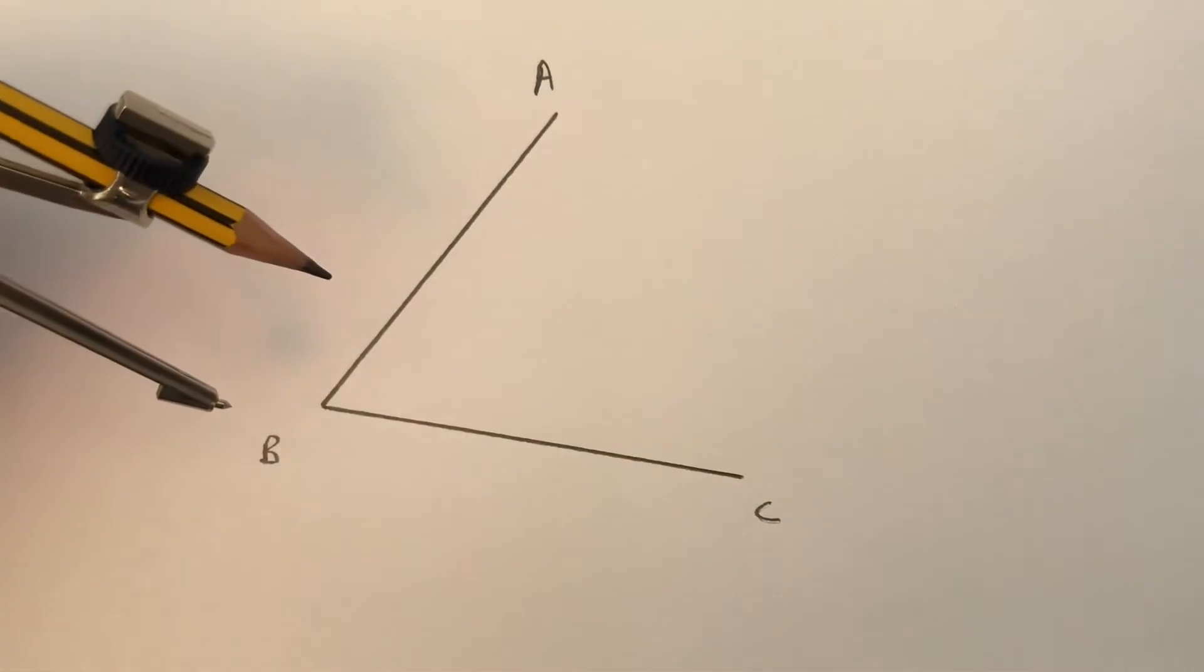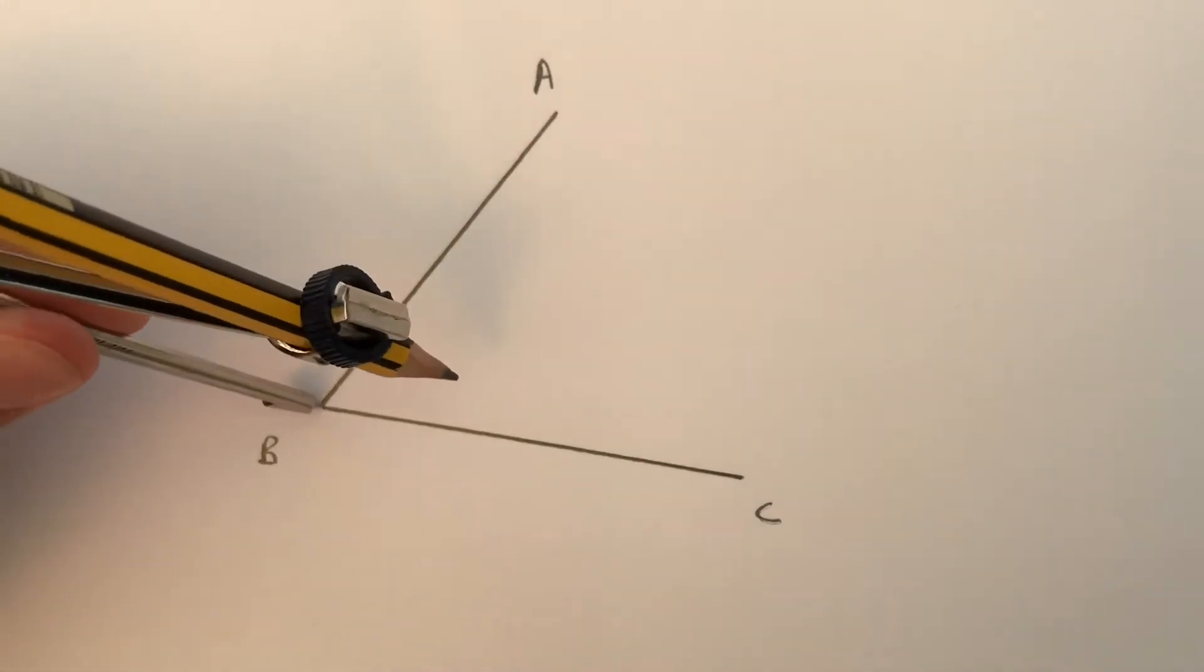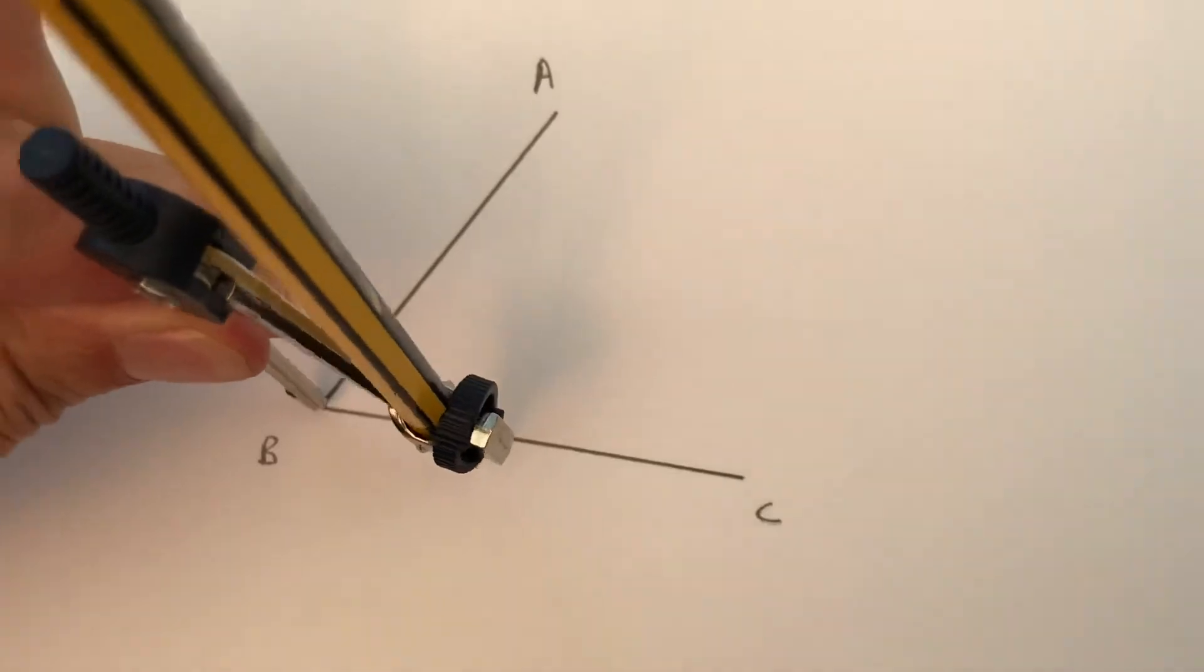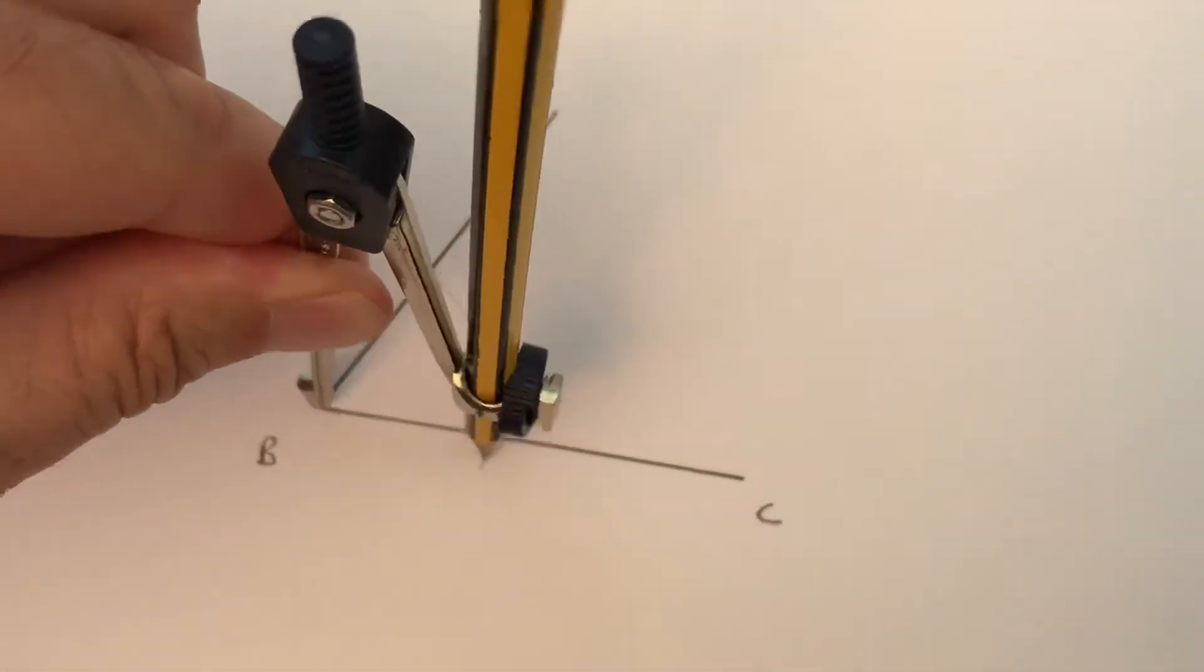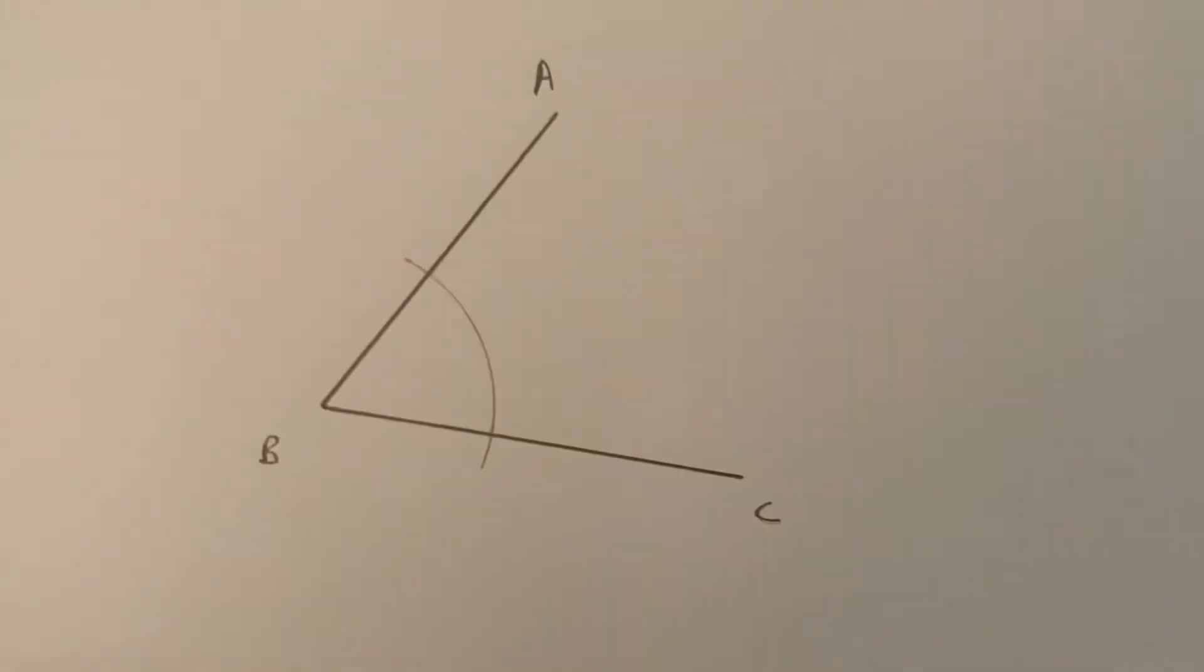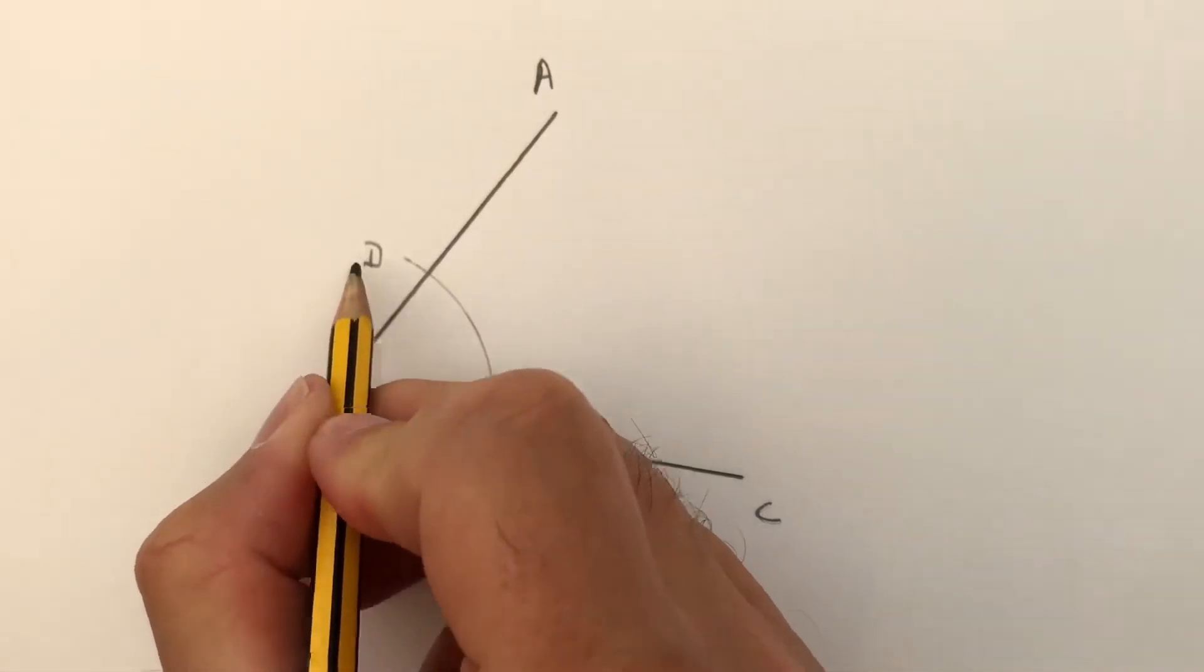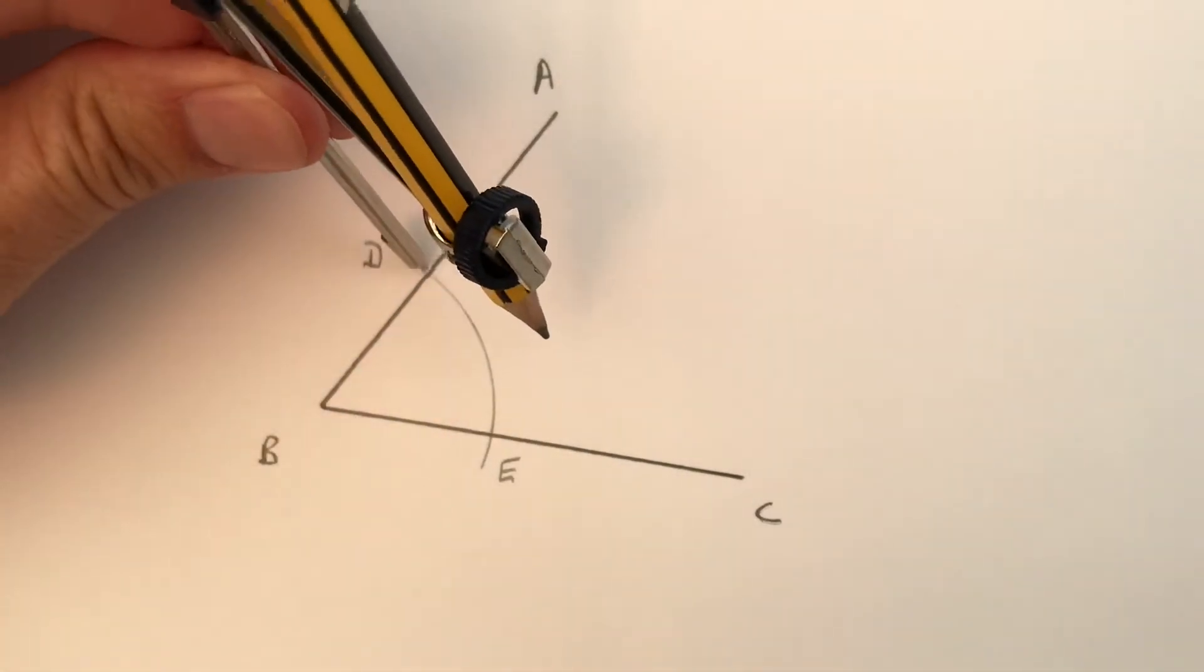Take a small radius on your compass, maybe about three centimeters, and put the point on the corner at B. Draw an arc across the whole angle, cutting the two lines. Call those two points D and E. Now, keeping the same radius, put the point on D.